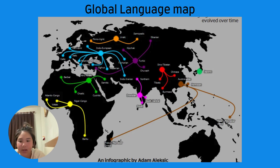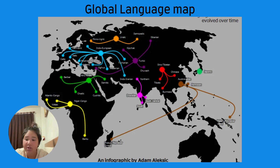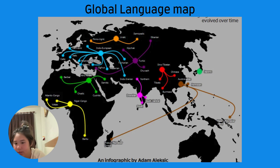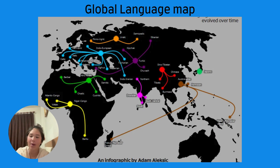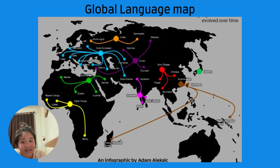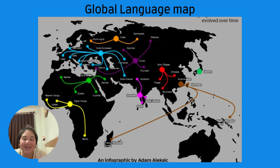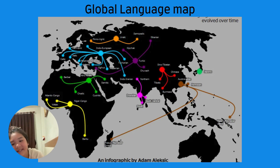Then romance languages — these come from Latin, because nothing says long-lasting like the language of a dead empire. French, Spanish, and Portuguese all trace their roots back to the Romans, who spread their language by conquering half of the known world. French has been the national language of France for over 1,000 years. Meanwhile, Spanish became dominant in Spain after centuries of war, invasion, and reconquest — and Spanish didn't stay in Europe.